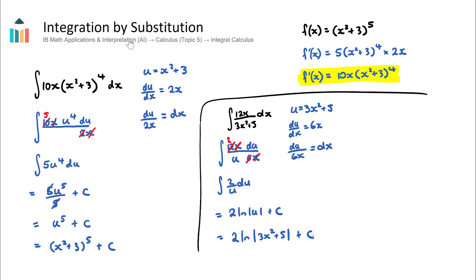In summary, integration by substitution is a method where we have x's in multiple places in the integral. We let a suitable expression equal u, find the derivative of u, rearrange to get dx as the subject, then rewrite the integral in terms of u — which is a much simpler integral. After integrating, we replace u back in terms of x. Hopefully you can now try some integration by substitution questions. Good luck.